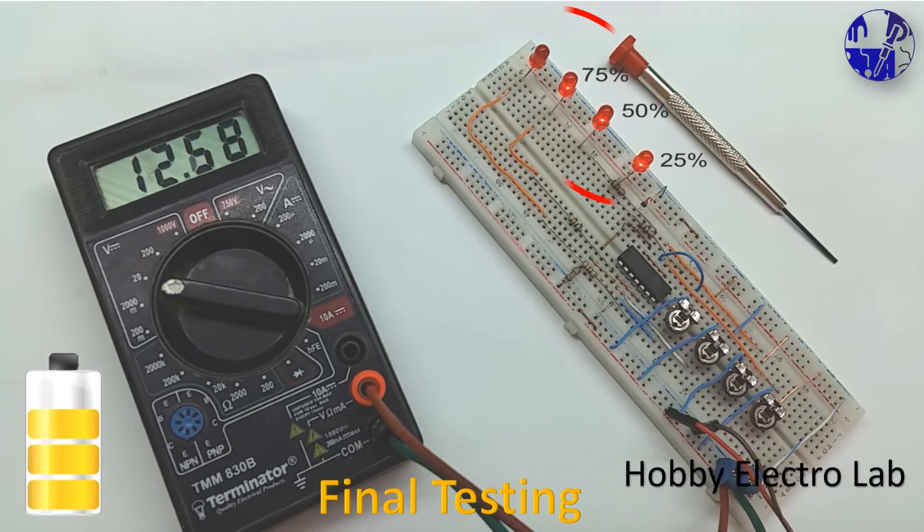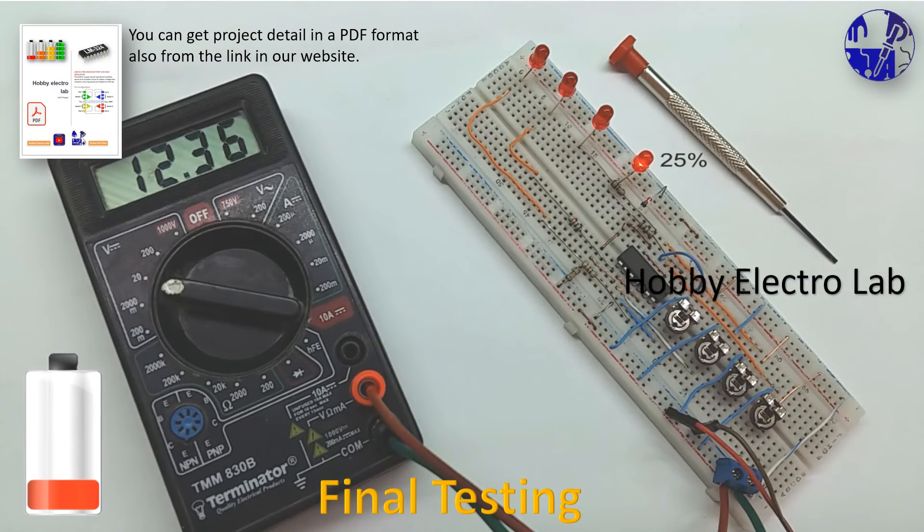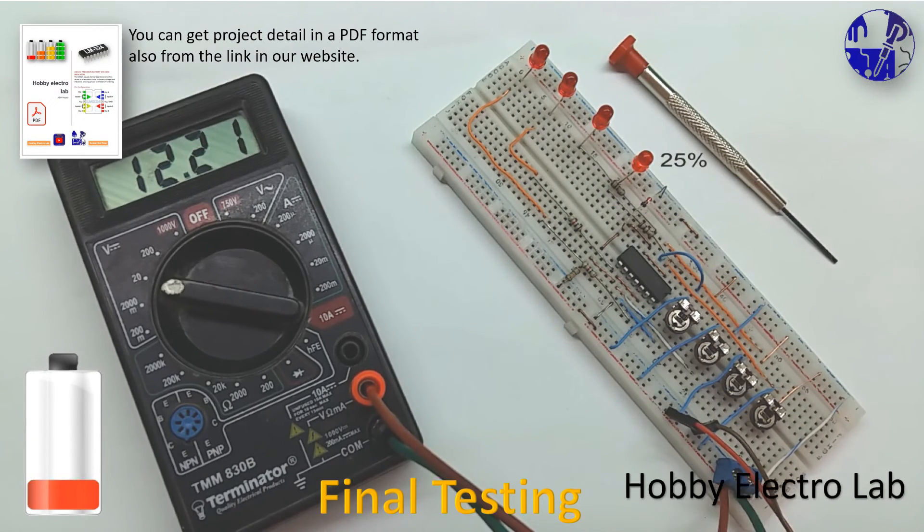When the voltage decreases, the LED indicators also diminish, accurately reflecting the voltage level in the battery.